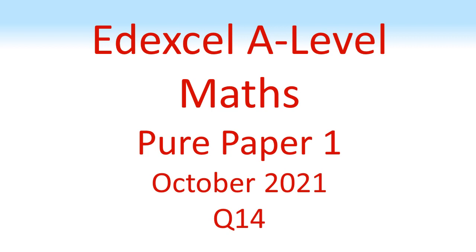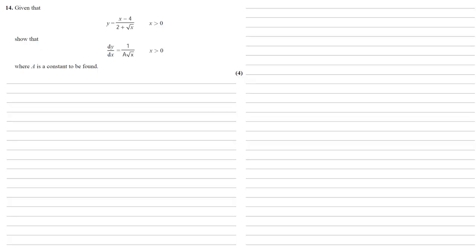Edexcel A Level Maths, Pure Paper 1, October 2021, Question 14. Given that y equals x minus 4 over 2 plus root x for x larger than 0, we need to show that dy by dx equals 1 over a root x, where a is a constant to be found.